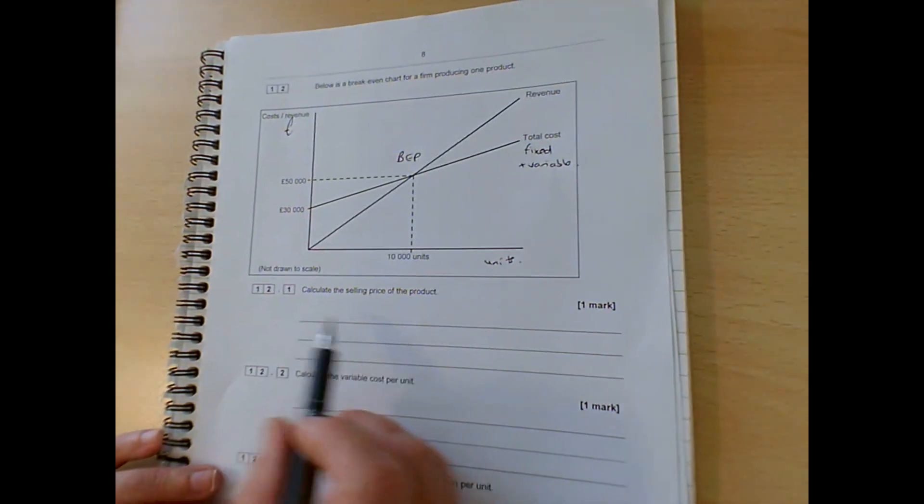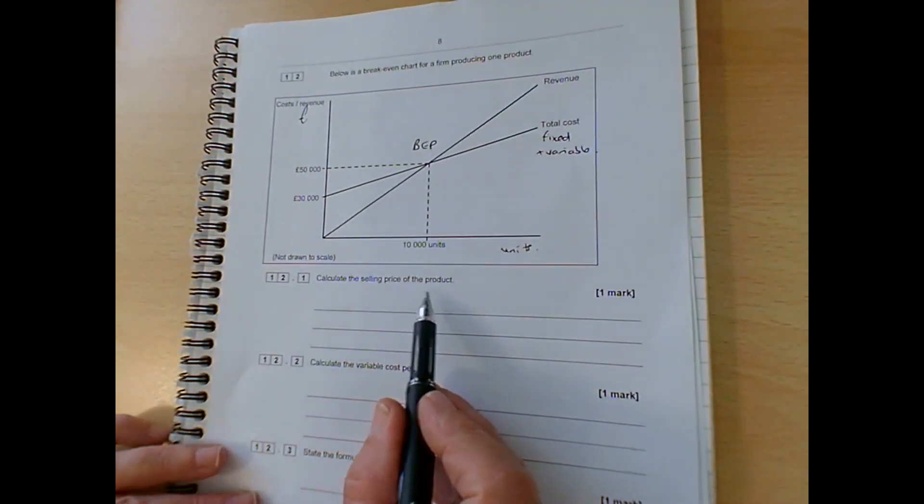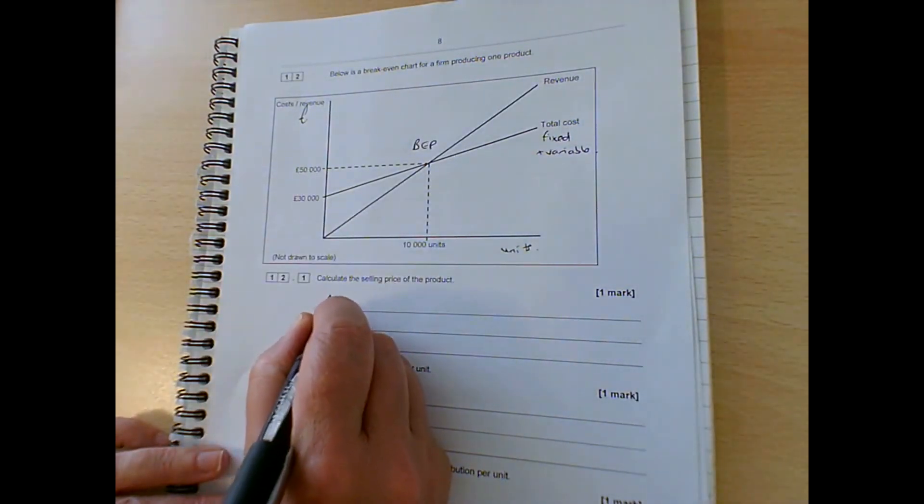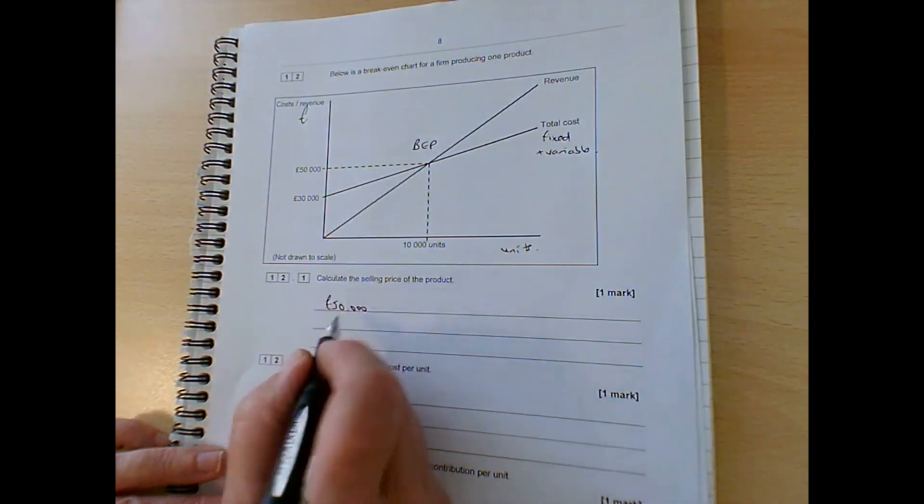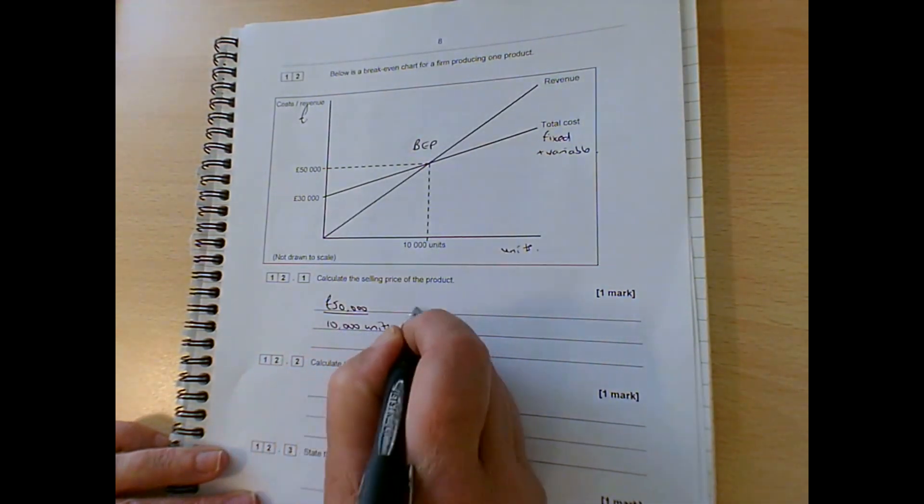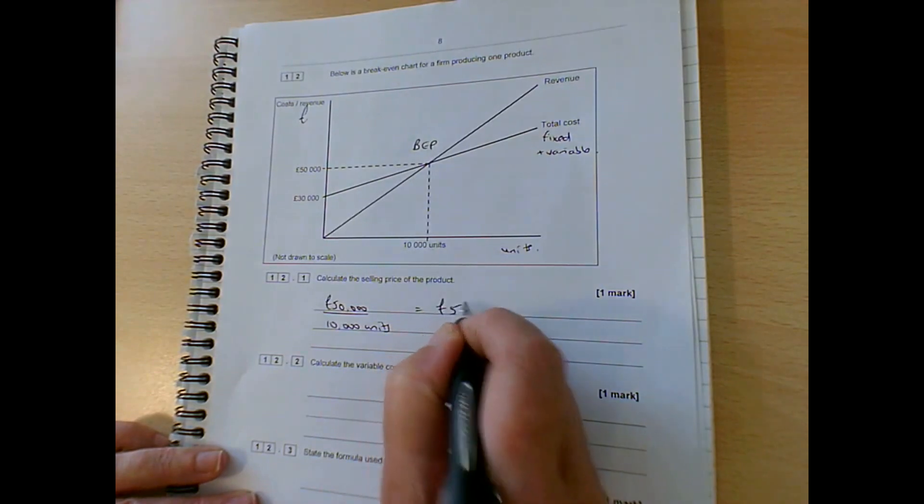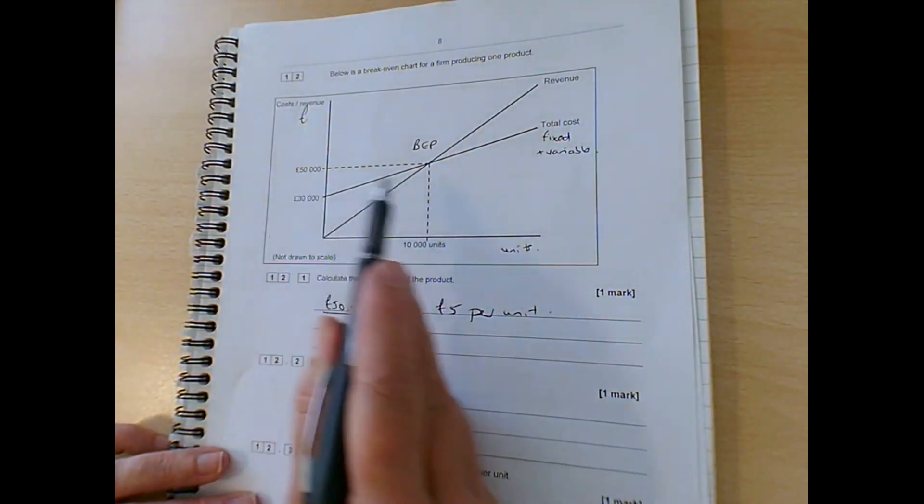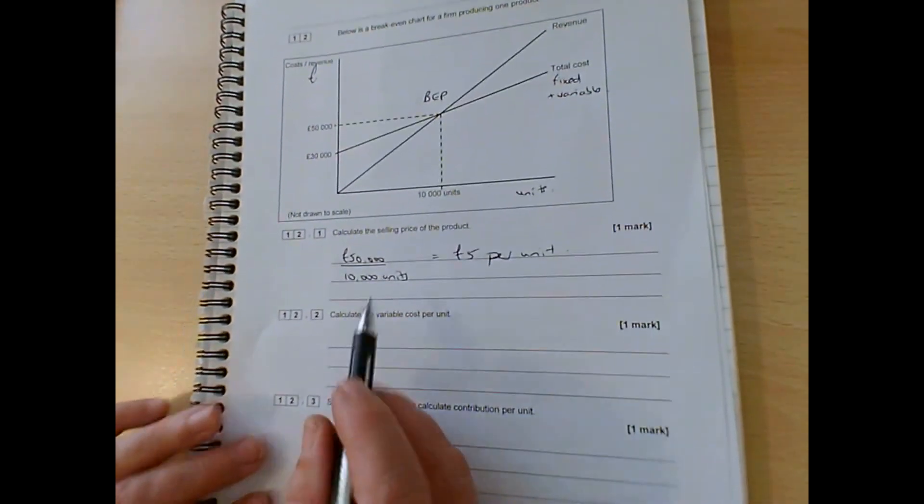And we can use this to find some of these figures. So the first thing it's asking us to do is calculate the selling price of the product. Well, the revenue at the breakeven point is £50,000. If we divide that by the 10,000 units, that's going to give us a selling price of £5 per unit. So we've just literally taken that 50,000 divided it by 10,000.